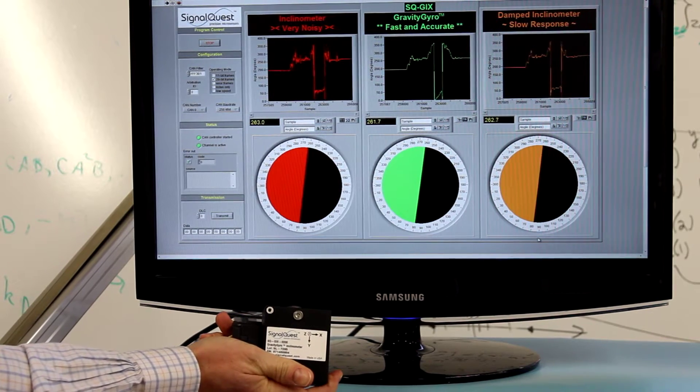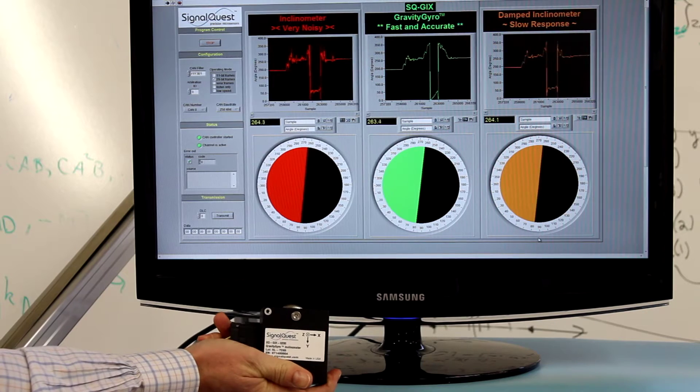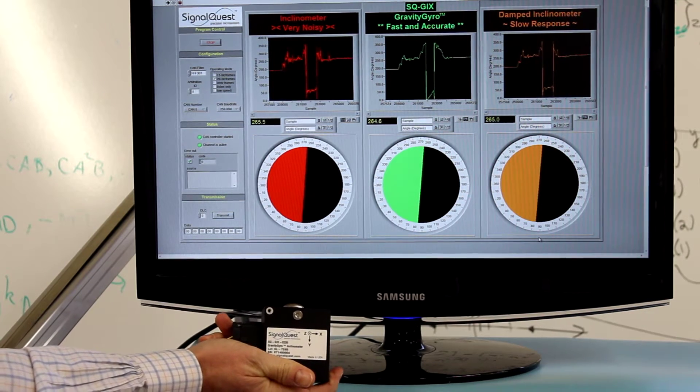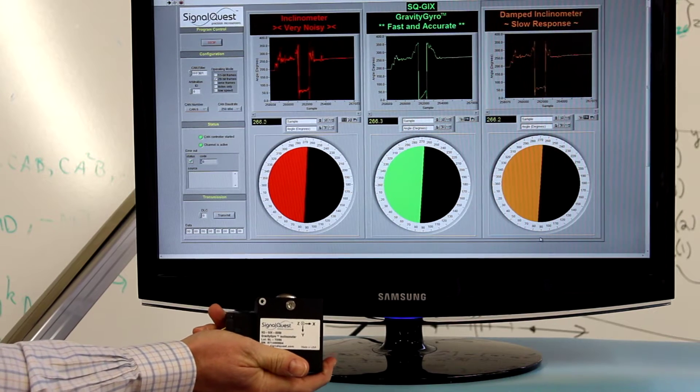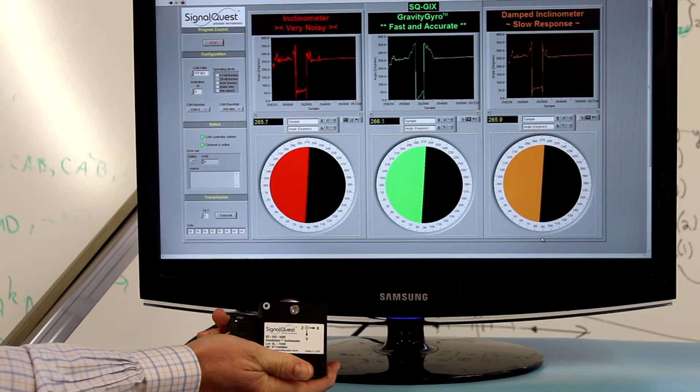In this video, we'll demonstrate SignalQuest's new GIX Gravity Gyro, a groundbreaking inclinometer that eliminates virtually all errors caused by shock, bump, acceleration, vibration, and even centripetal motion.